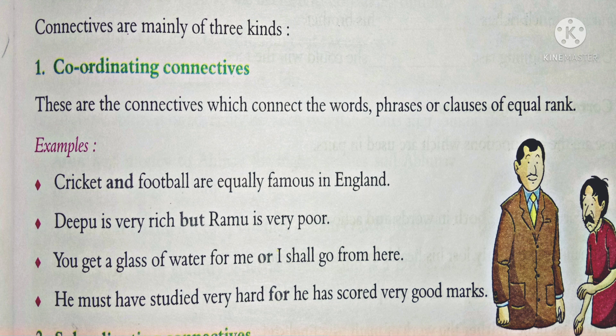See here examples. Cricket and football are equally famous in England — England mein cricket or football. Here, 'and' is the coordinating connective. The next one: he is very rich but Ramu is very poor. Here, 'but' is the coordinating connective.